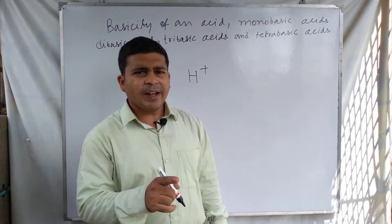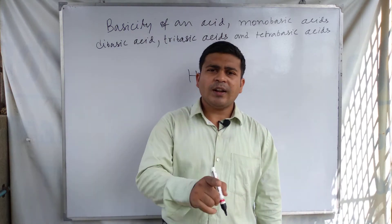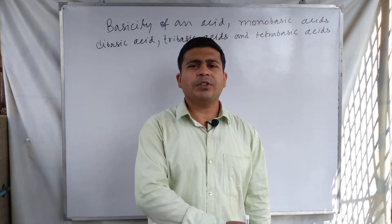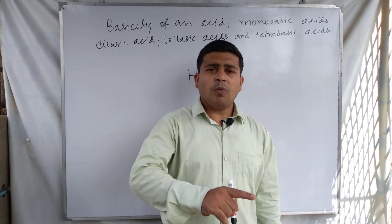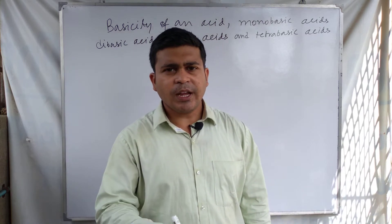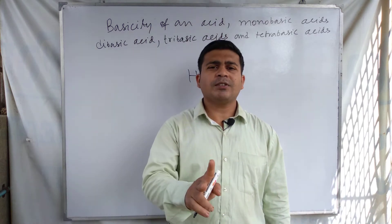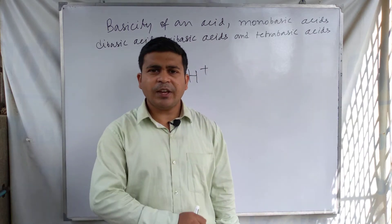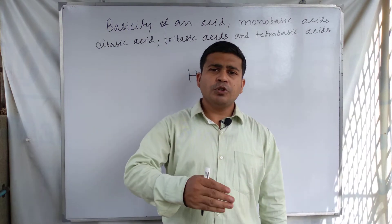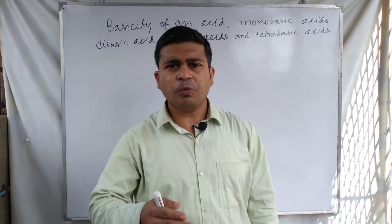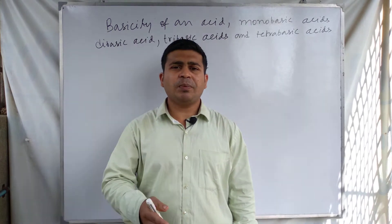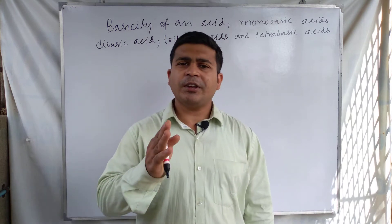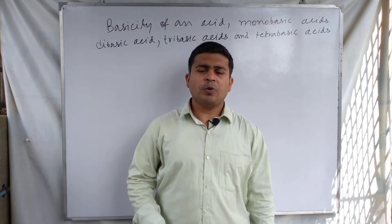If one acid produces only one H⁺ ion per molecule, we call it a monobasic acid. If one molecule of an acid can produce two H⁺ ions in its aqueous solution, we call it a dibasic acid. If any acid can produce three H⁺ ions in its aqueous solution, we call it a tribasic acid.